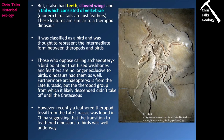It was classified as a bird and thought to represent the intermediate species showing that birds evolved from dinosaurs. However, there are those who oppose calling Archaeopteryx a bird, pointing out that fused wishbones and feathers are no longer exclusive to birds, because we've begun to find more and more examples of dinosaurs — especially theropods — covered in feathers, and some dinosaurs that had fused clavicles. Furthermore, Archaeopteryx is from the late Jurassic, but the theropod group from which they're likely descended didn't really take off until the Cretaceous.